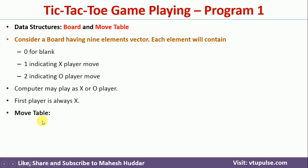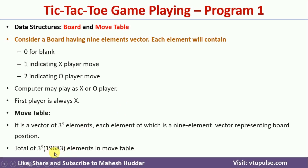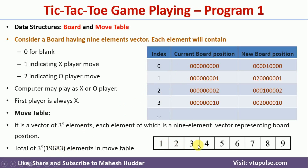There is another data structure called the MoveTable. The MoveTable contains 3 raised to 9 elements — that is 19,683 entries in total. Each entry consists of a 9-element vector representing the current board position and the corresponding new board position.